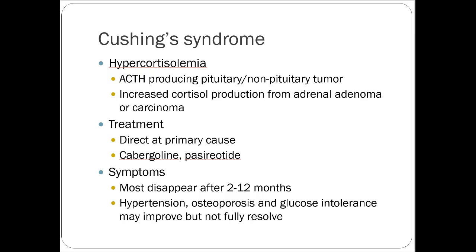Cushing's syndrome happens with hypercortisolemia — excessive cortisol in the body — usually caused by tumors producing ACTH. Treatment is directing the primary cause: remove the tumor, treat with chemotherapy, or address other identifiable sources. There are a couple of drugs that treat Cushing's — working as anti-steroid effects — but long-term they're not a great option for most people. Symptoms disappear after 2 to 12 months.